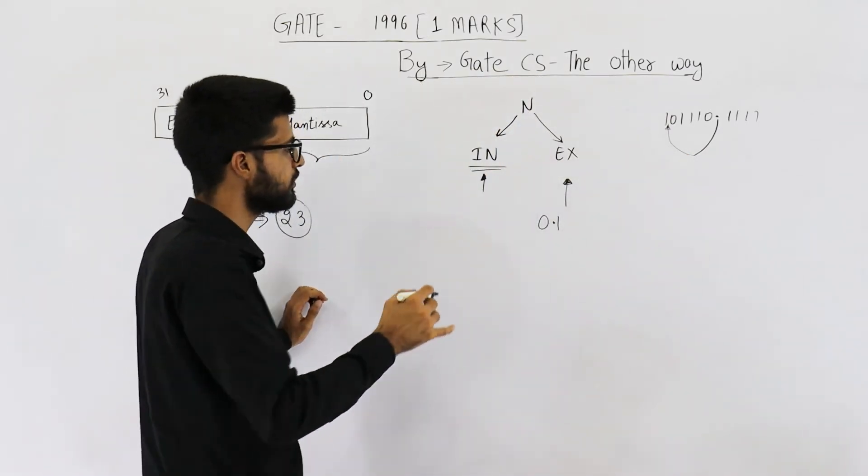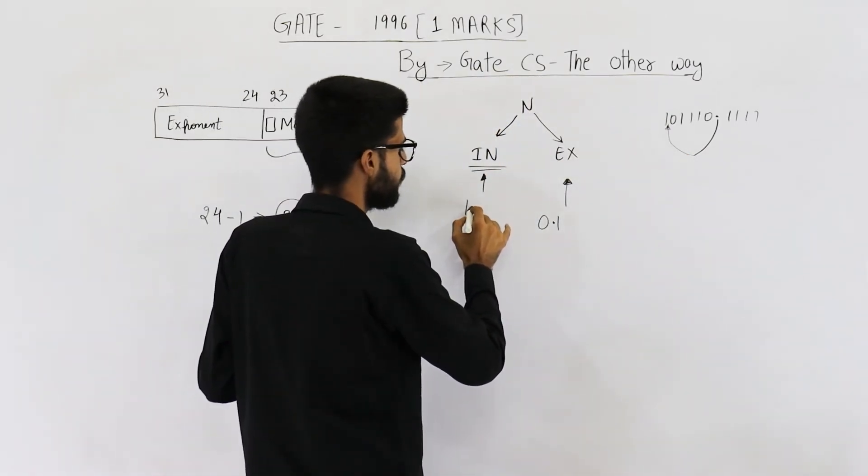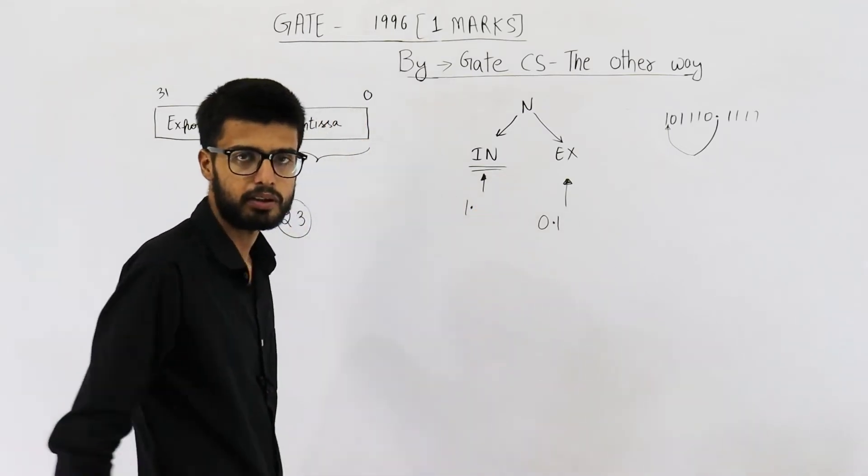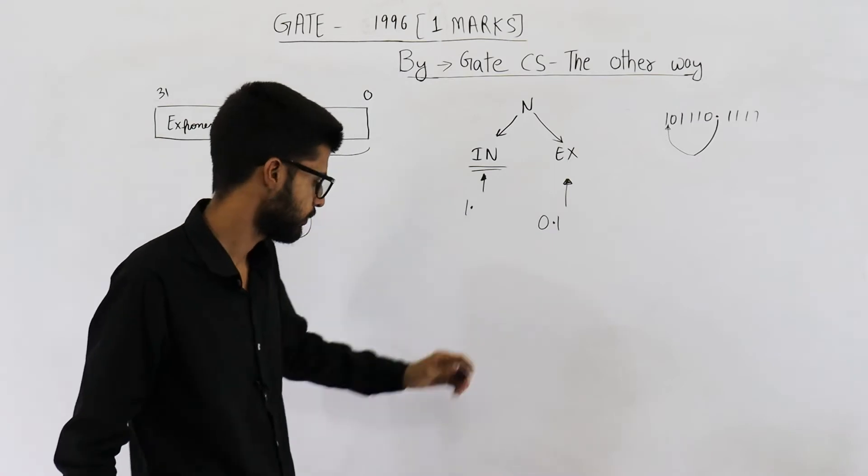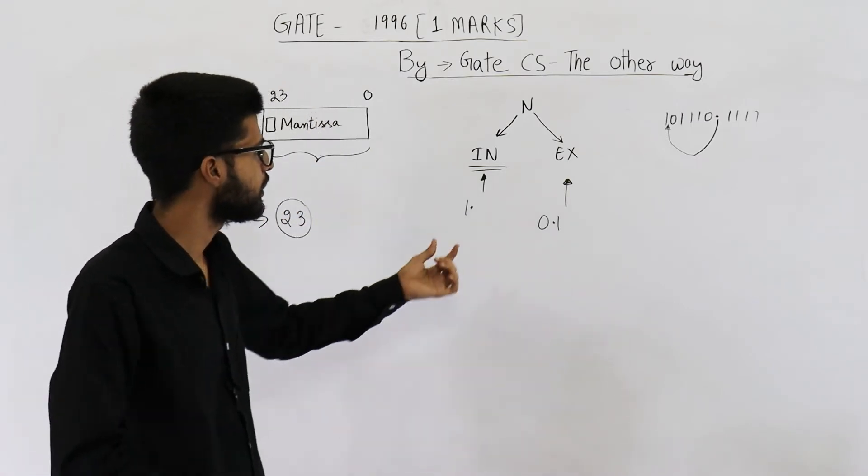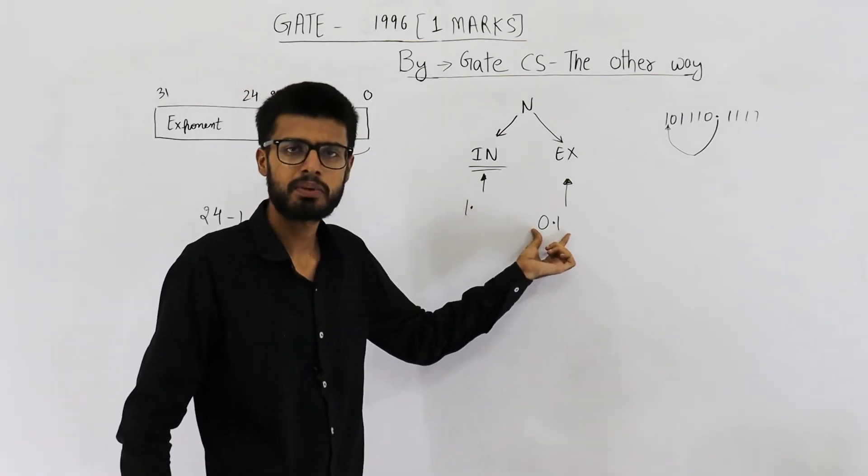Such numbers, implicitly normalized numbers, begin from 1.something. It can be 1.001 or 1.1, anything. The thing is, they will be in this form. These numbers will be in this form.